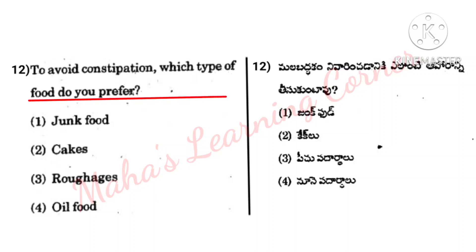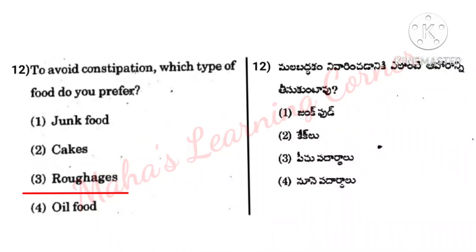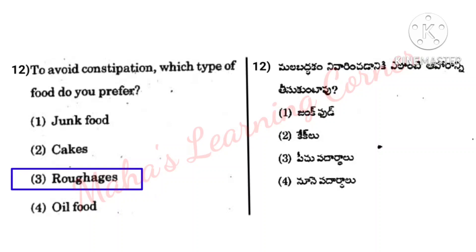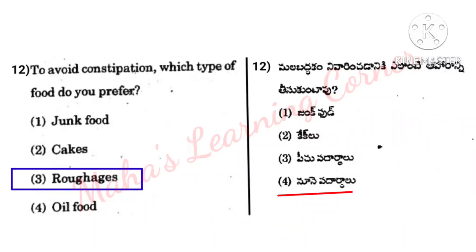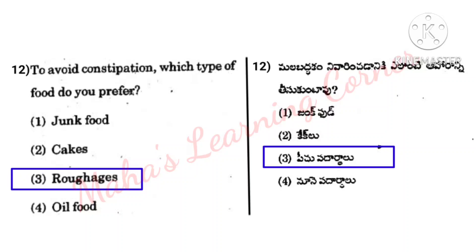Question: To avoid constipation, which type of food do you prefer? Options: Junk food, Cakes, Roughage (fibrous foods), Oily food. Correct answer: Option 3, Roughage. To avoid constipation, include roughage in your food. Take fibrous/roughage food items to prevent constipation.